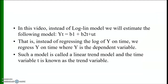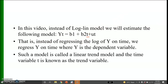In this video, instead of estimating a loglin model, I shall estimate the following model: yt = beta 1 + beta 2 * t + ut, where the subscript t stands for the time period and t in this equation stands for the trend. So instead of regressing the log of y on time, we will regress y on time directly. Such a model is known as a linear trend model and the time variable t is known as the trend variable.